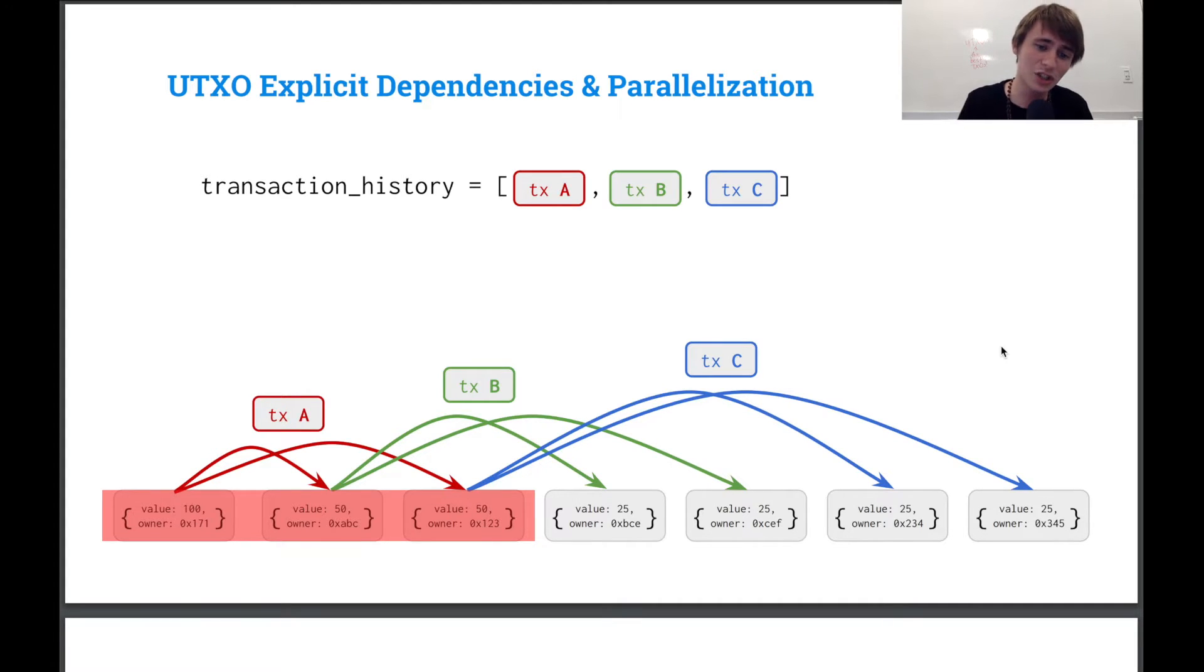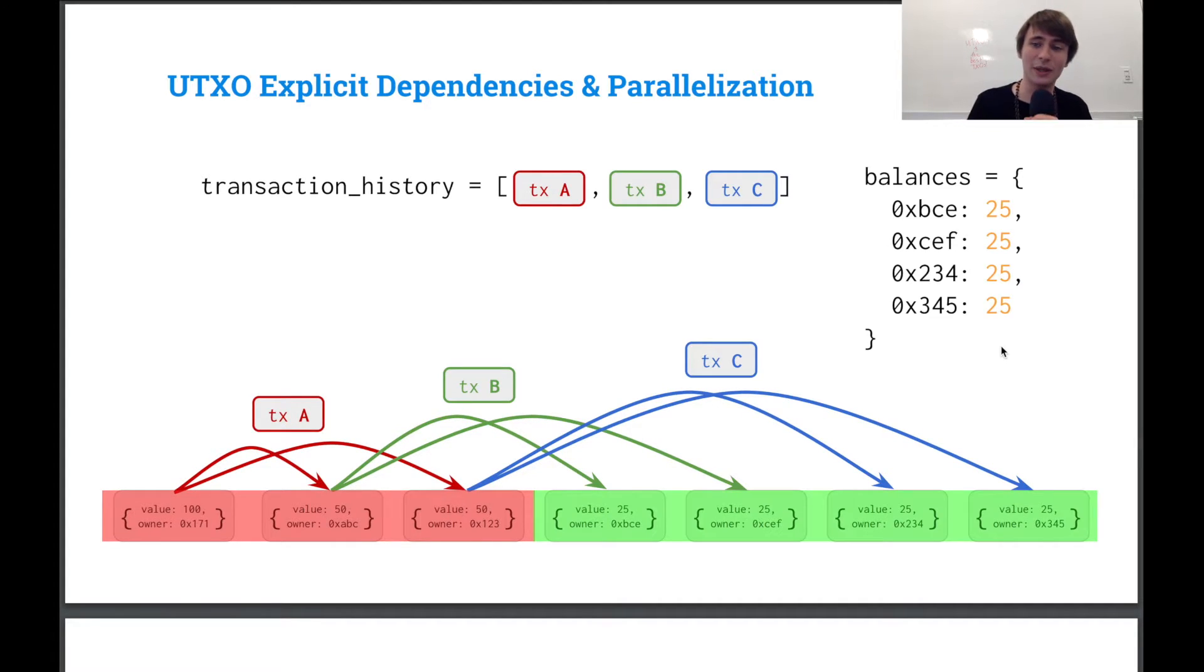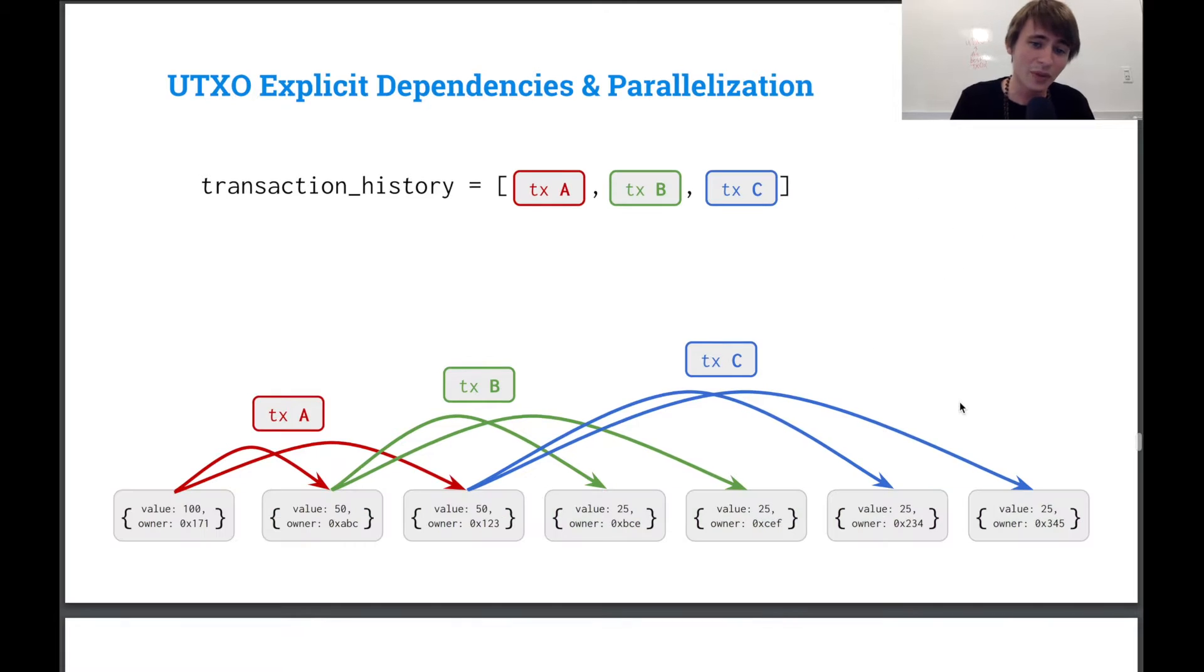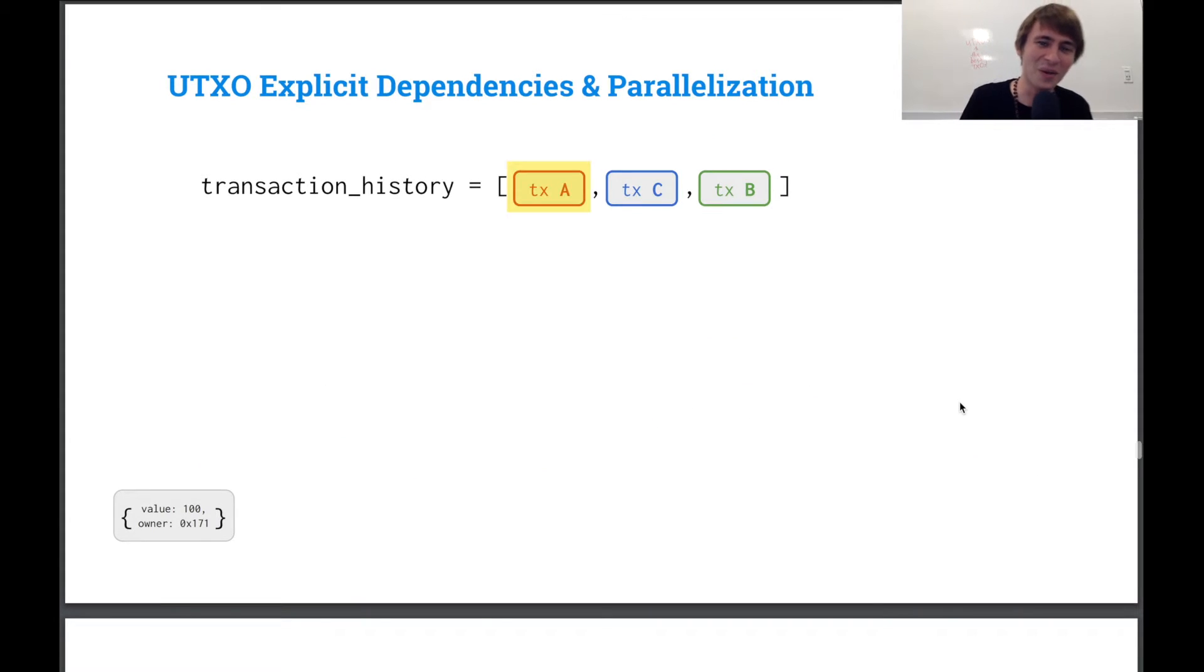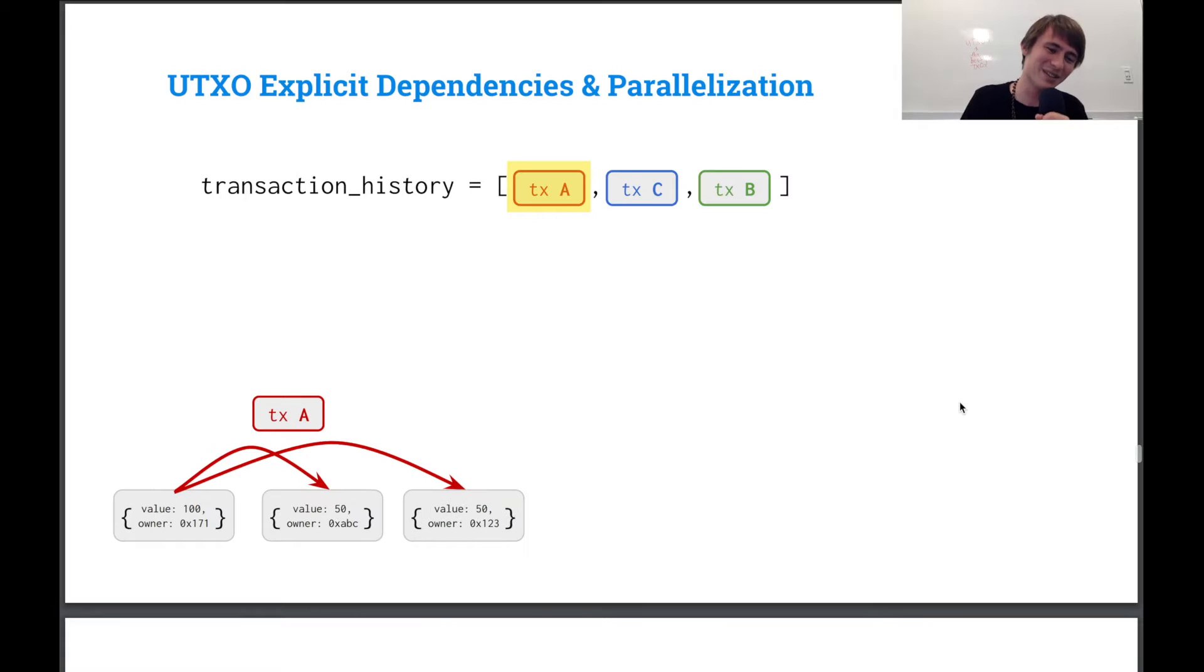And then we can generate the balances by looking at, okay, here are the spent transaction outputs and here are the unspent transaction outputs. And so we can see these are our unspent outputs and these are corresponding to those. So what can we do? Well, let's try flipping transaction B and transaction C and let's see what happens. No pun intended.